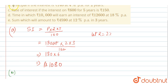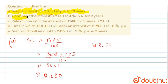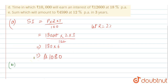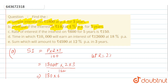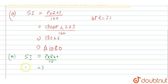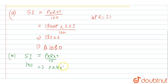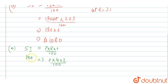For the second sub-part, we need to find the principal if the interest is ₹140 at 4% per annum for two years. We apply the same formula: simple interest equals P into R into T by 100. So 140 equals P into 4 into 2 divided by 100. We need to find P, so we cross multiply: 140 into 100 divided by 4 into 2.